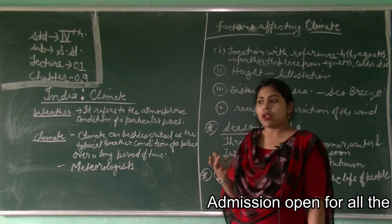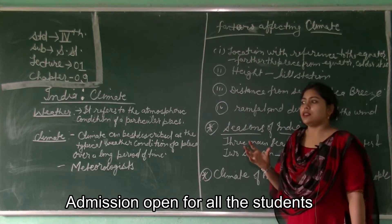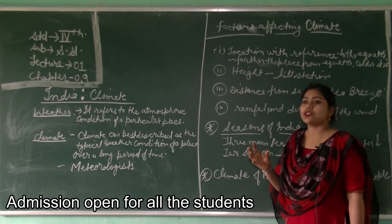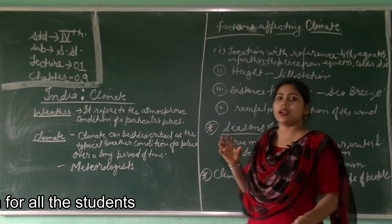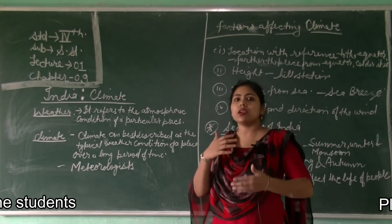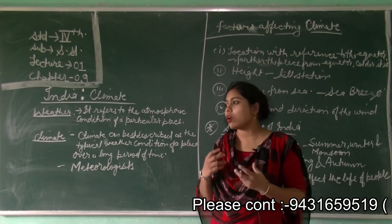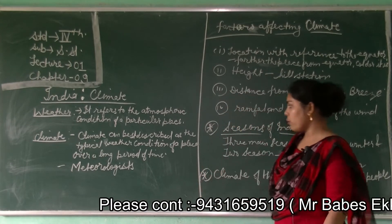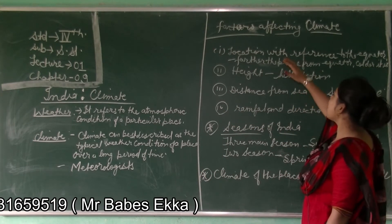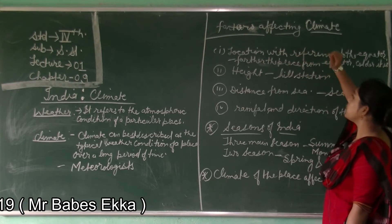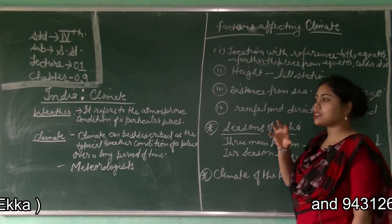Humid refers to the water vapor present in the air. Water vapor is the condition of water when it is heated — water converts into gaseous form and that is called water vapor. Now we will see the factors affecting the climate.